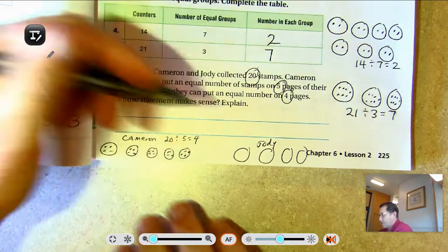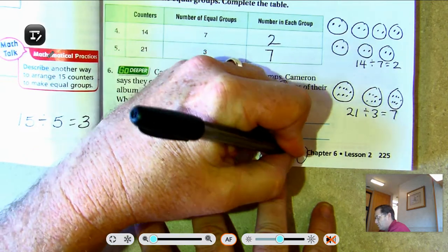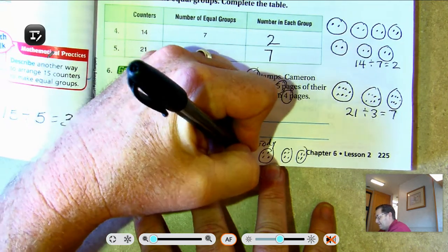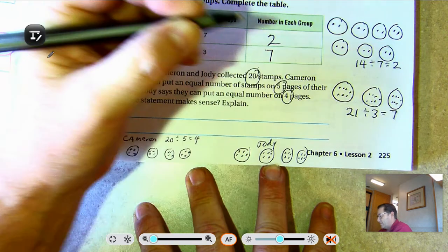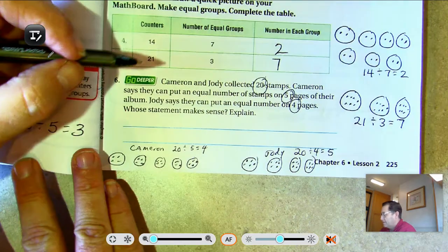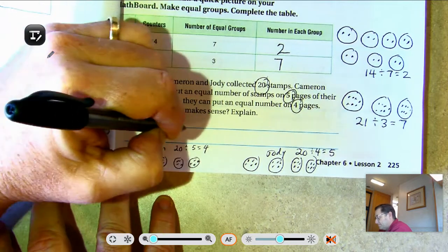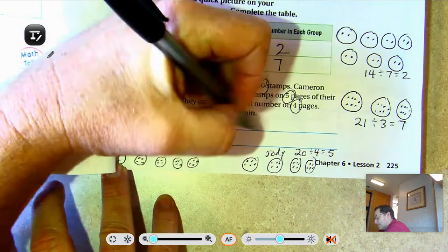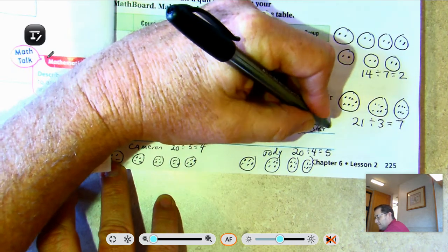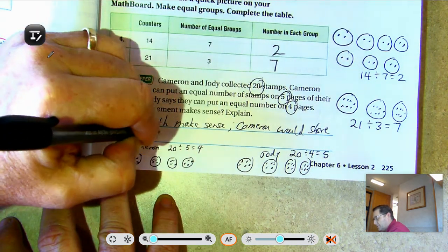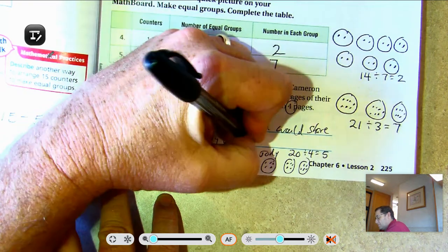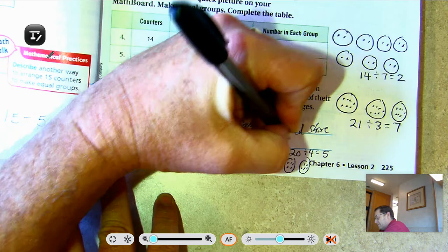Jody, 1, 2, 3, 4, 5, 6, 7, 8, 9, 10, 11, 12, 13, 14, 15, 16, 17, 18, 19, 20. Okay, well, she shared them equally too. She went 20 divided by 4 equals 5. They both make sense. So Cameron would share 4 in each group, 4 on each page. Jody would share 5 on each page.